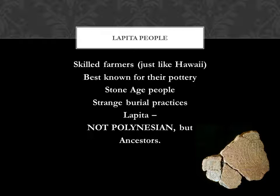So the Lapita people — these first people that landed in New Caledonia — were skilled farmers. When I say skilled farmers, I don't mean they had skills like we do now; they're using their hands, their feet, maybe some basic sticks. But it is farming and it's organized. They're best known for their pottery, though part of the reason for that is because we really don't know much about them. We know they were in the Stone Age.